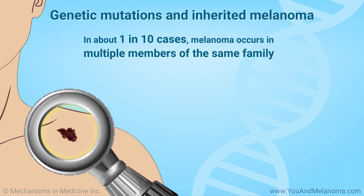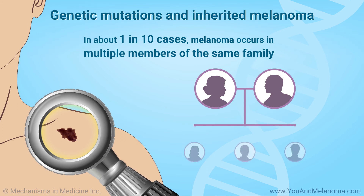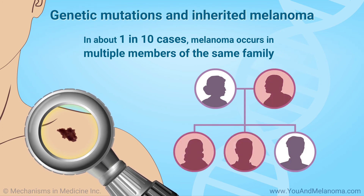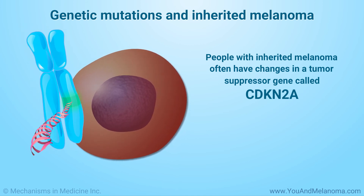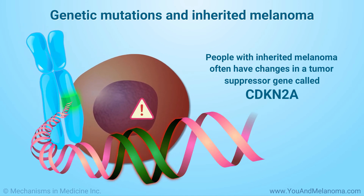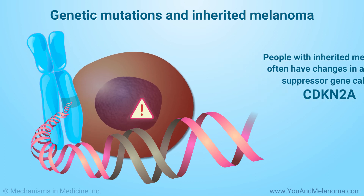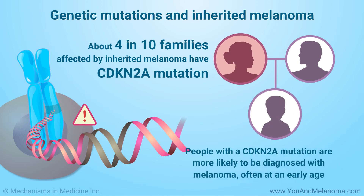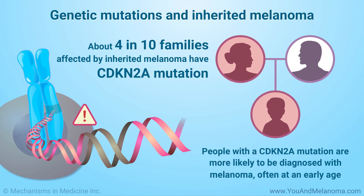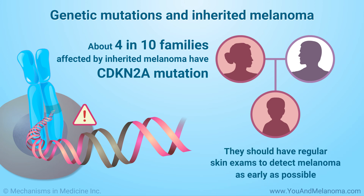In about one in ten cases, melanoma occurs in multiple members of the same family. People with inherited melanoma often have changes in a tumor suppressor gene called CDKN2A. About four in ten families affected by inherited melanoma have mutations in this gene. People with this mutation are more likely to be diagnosed with melanoma, often at an early age, and should have regular skin exams to detect melanoma as early as possible.